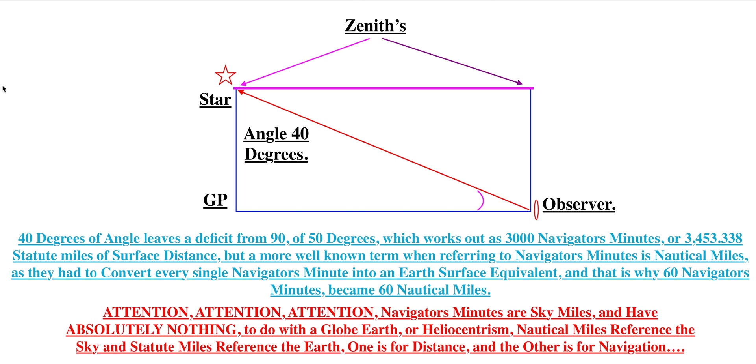Okay, this is very simple. Here is the GP of the star. Here is the observer. Here is a 40 degree angle to the star, which is here. This is the observer's zenith here. This is the zenith of the GP of the star. They have a co-altitude.